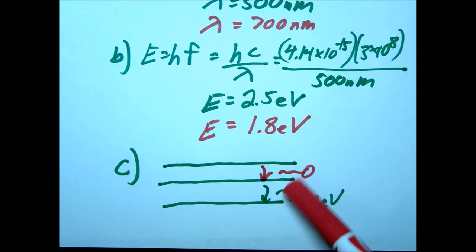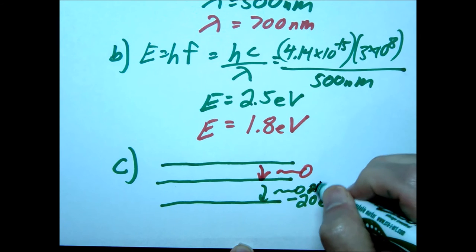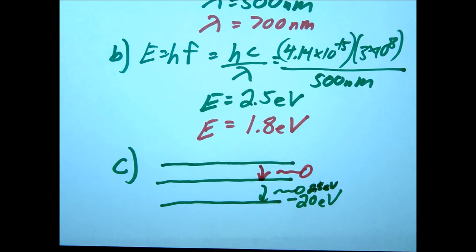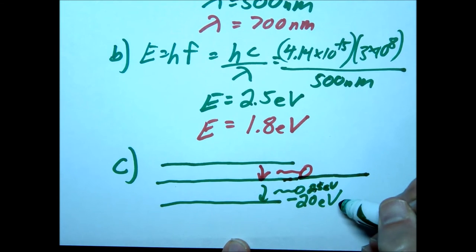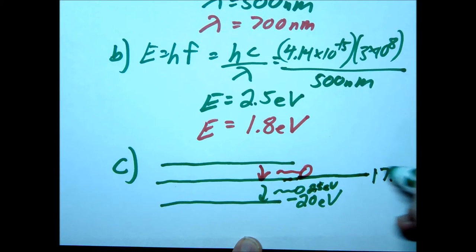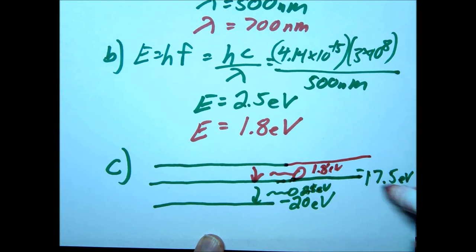Let's look at the green one. If we went from negative 20 to release that green one, it must be 2.5 electron volts. Therefore, this level must be negative 20 plus 2.5, which is negative 17.5 eV. Likewise, we do the same with the red. The red is 1.8. Going from negative 17.5 plus 1.8 gets us to negative 15.7 electron volts.